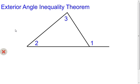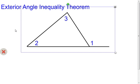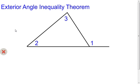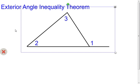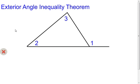This theorem is dealing with the measure of the exterior angle, angle 1 in my picture, and the relationship between the two remote interior angles. What I want you to think back to is that exterior angle theorem that we had, that said if we took the measure of angle 2 and the measure of angle 3 and added them together, it would equal the measure of angle 1.